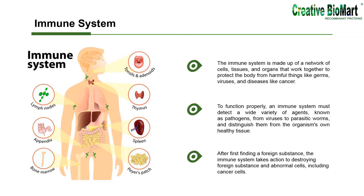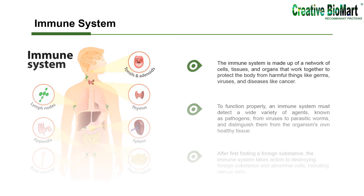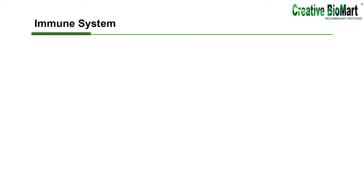After first finding a foreign substance, the immune system takes action to destroy foreign substances and abnormal cells, including cancer cells. There are two main parts of the immune system.